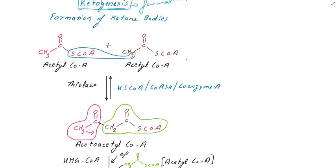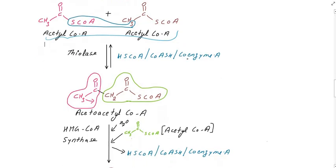Acetyl-CoA is very important in the TCA cycle — that is the cycle for generating energy. In ketogenesis, two molecules of acetyl-CoA combine together to begin the pathway.